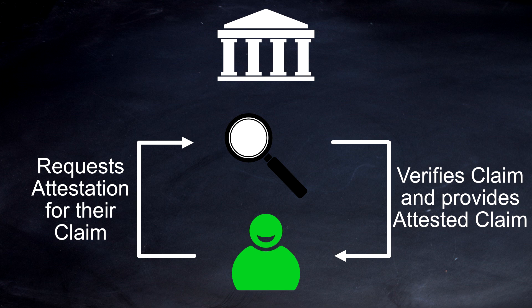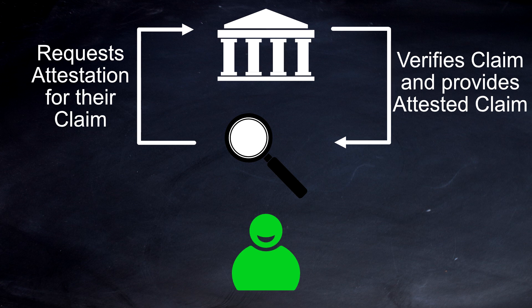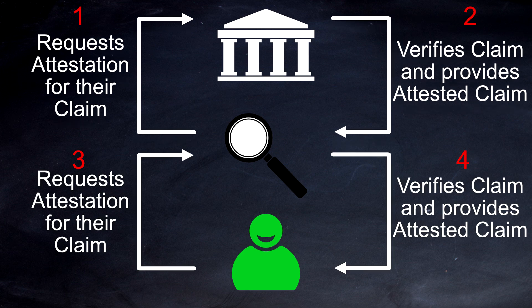The inspection agency verifies that claim and provides an attested claim. However, how can the company be sure that the inspection agency actually has the authority to issue the attested claim? And moreover, what about the company's customers — how can they be sure? In reality, what actually happens is that the inspection agency must first request attestation for their claim from the certifying authority, who then verifies their claim and provides their own attested claim to the inspection agency. The chain of trust looks like this, from one through to four.